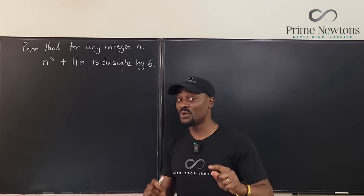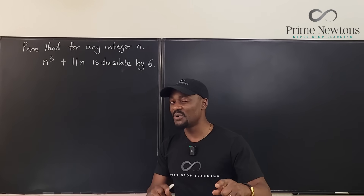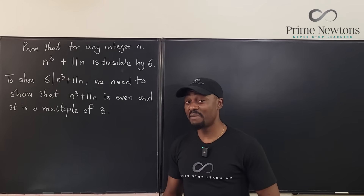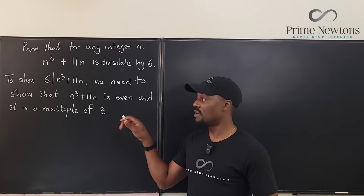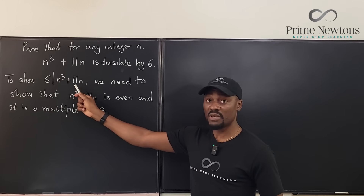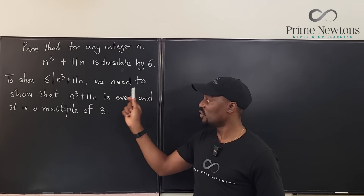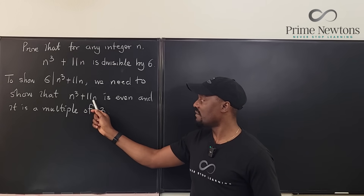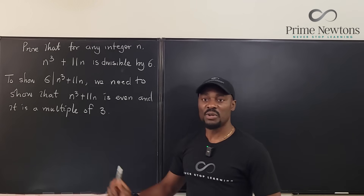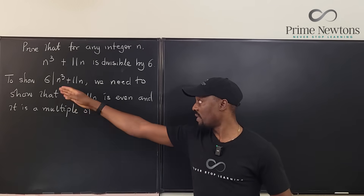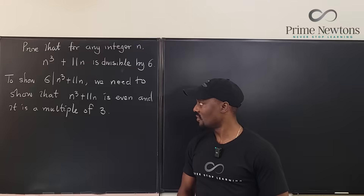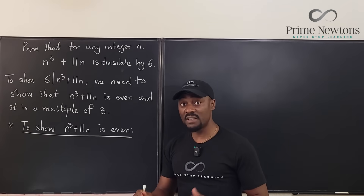I'll write all the explanation clearly: to show that six divides n cubed plus 11n, we need to show that n cubed plus 11n is even, and that it is a multiple of three. Then we know that six divides it. So let's begin — first, let's show that this is always even.